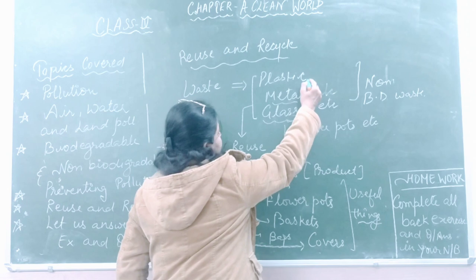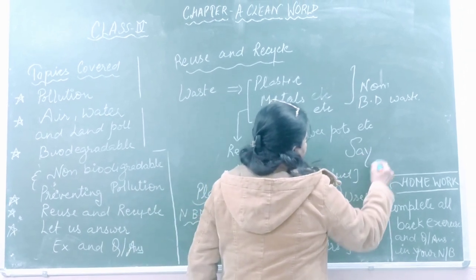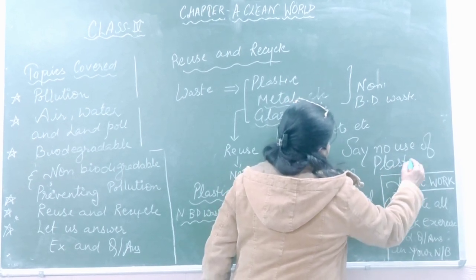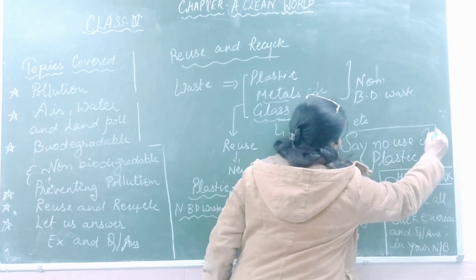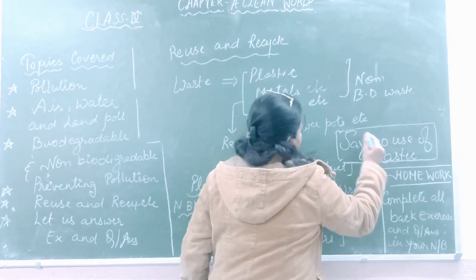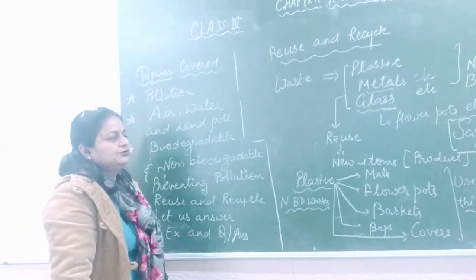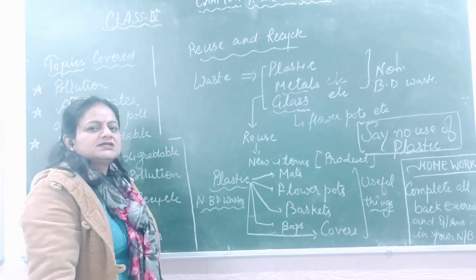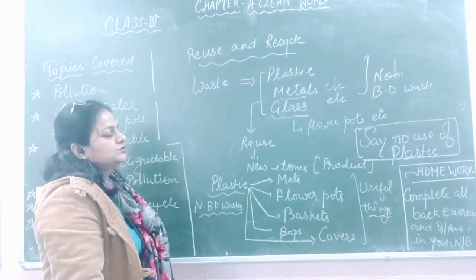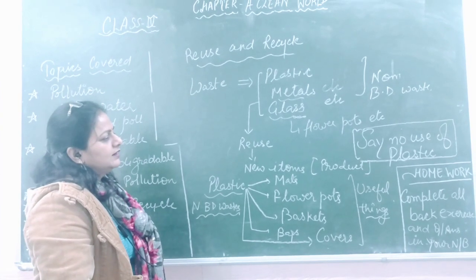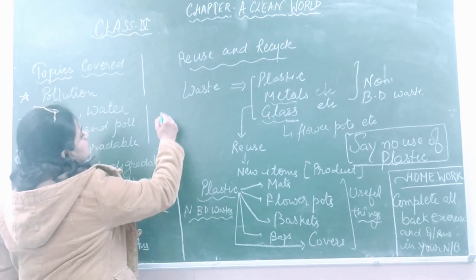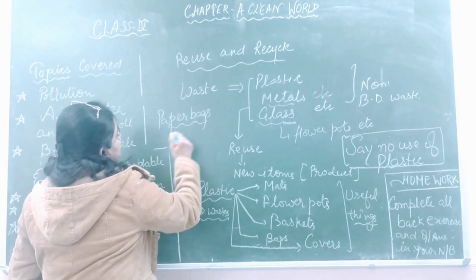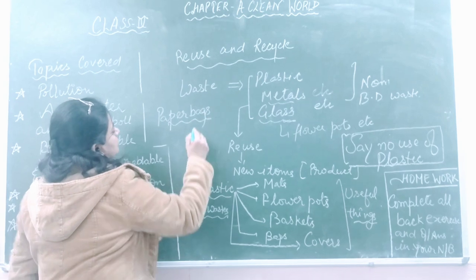Generally we say: say no to use of plastic. This is the main symbol for plastic that the government has also given us — say no to plastic. This is the order of the government. Nowadays plastic is restricted and nobody is using plastic bags. What type of bags do we have to use? We have to use paper bags. Make some paper bags and use them whenever you are going to the market.